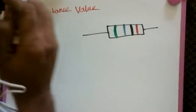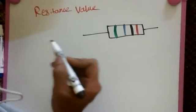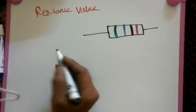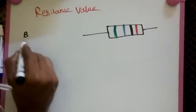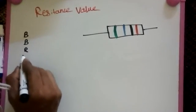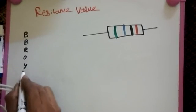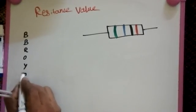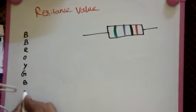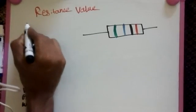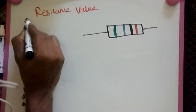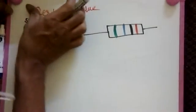First thing we are going to memorize some keywords. What is that keyword? That one is BB Roy Great Britain Very Good Wife. This is the keyword and then some two words just gold and silver and then none.